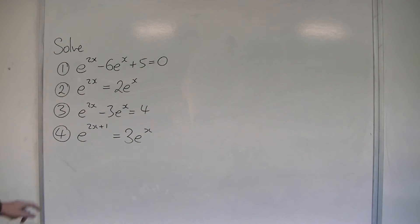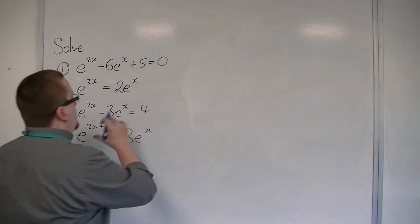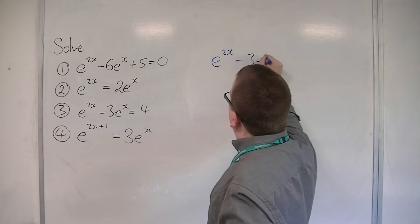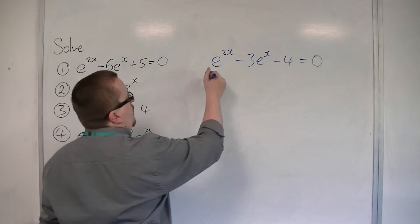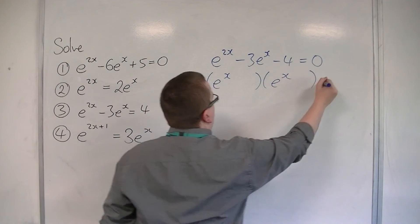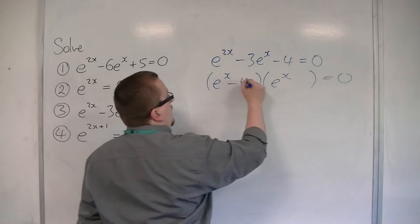Number 3, e to the 2x minus 3e to the x equals 4. Just take 4 from both sides to start off with. Then I'm going to factorise it. So I'll have e to the x and e to the x. So I'll have a minus 4 and a plus 1.